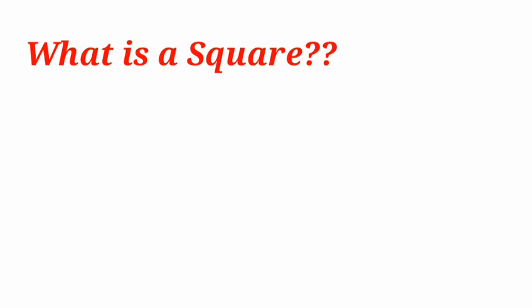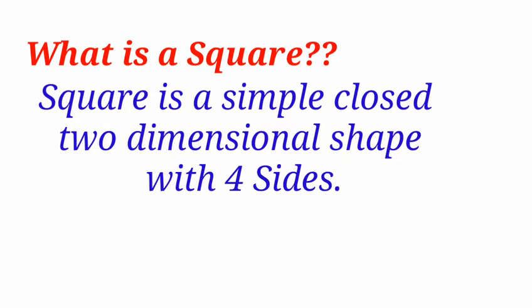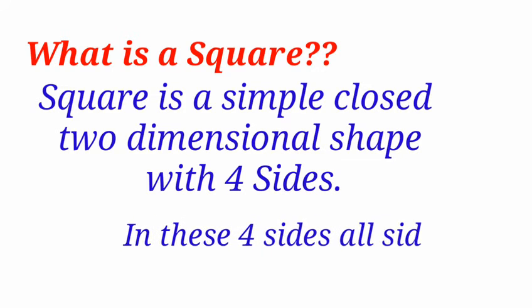What is a square? A square is a simple closed two-dimensional shape with four sides. In these four sides, all sides are equal.